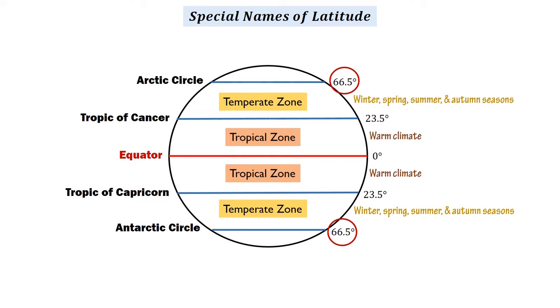Finally, the areas within the Arctic and Antarctic circles are called polar zones that have a cold climate.